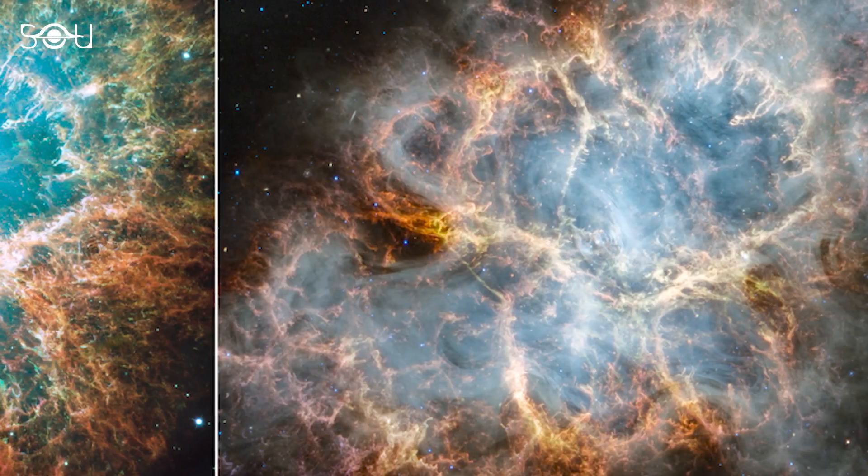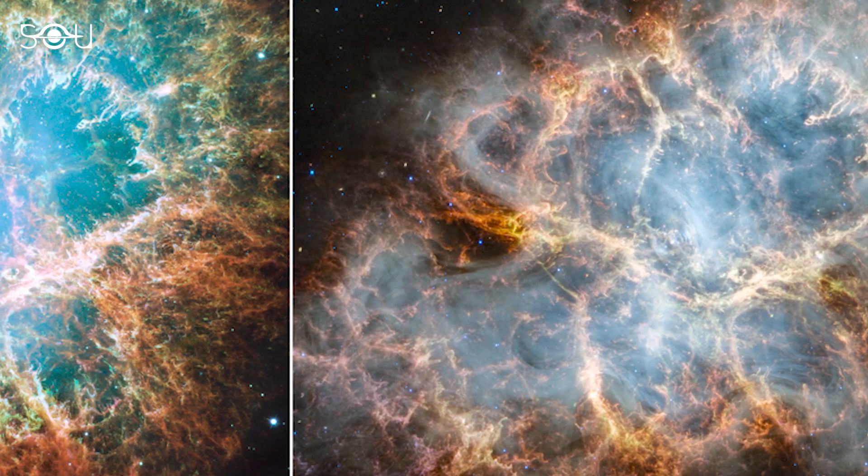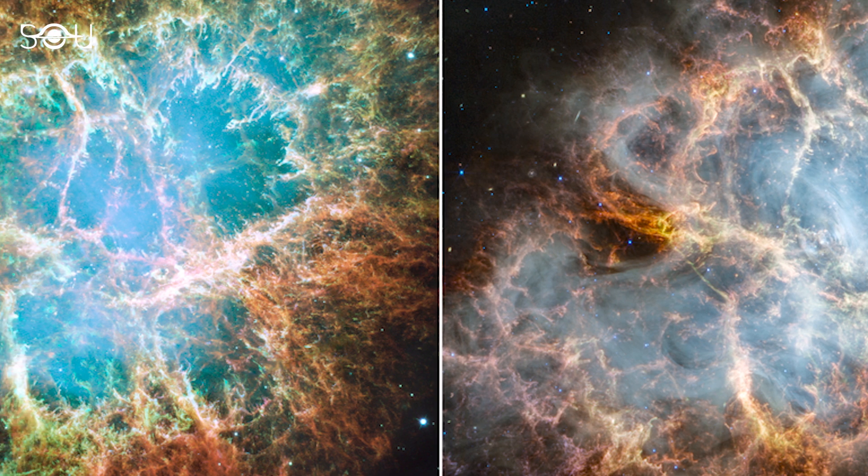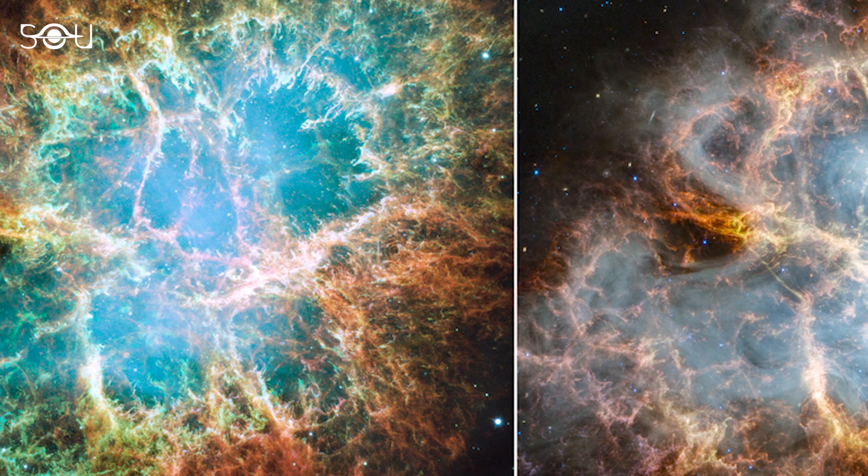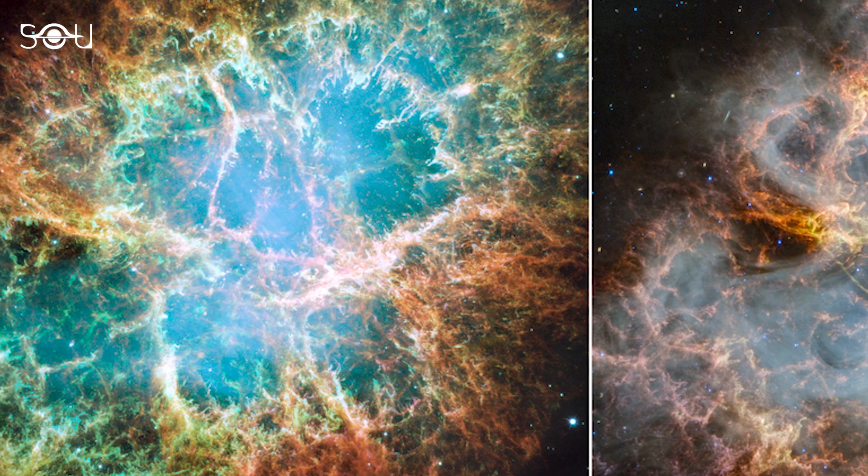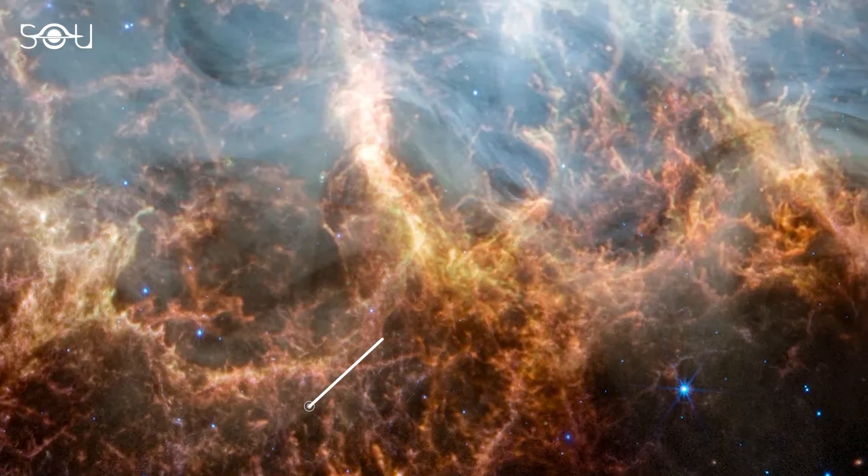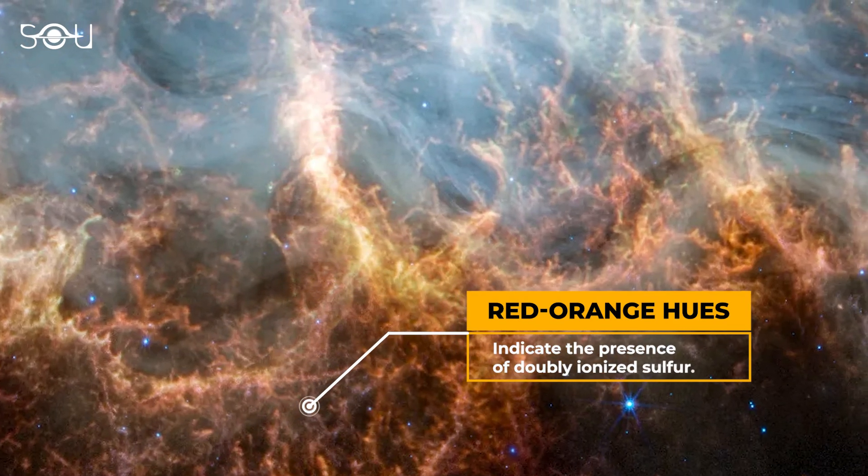Upon examining the remarkable image of the Crab Nebula captured by the James Webb Space Telescope, one initially notices its resemblance to the optical wavelength image the Hubble Space Telescope took in 2005. The Webb image reveals a vibrant, cage-like structure of fluffy, gaseous filaments in red-orange hues.